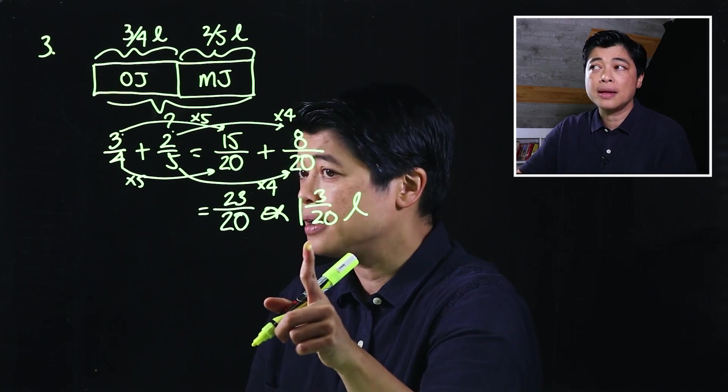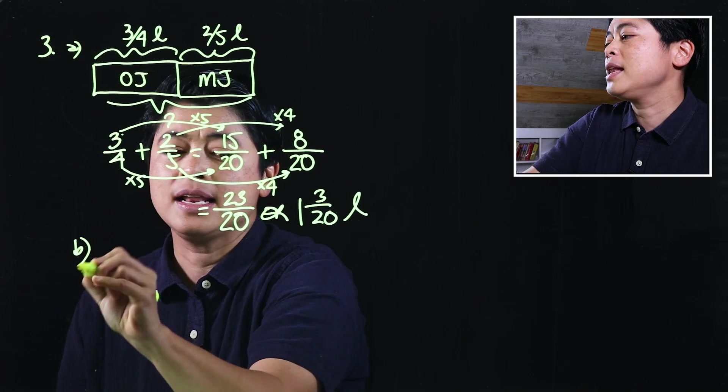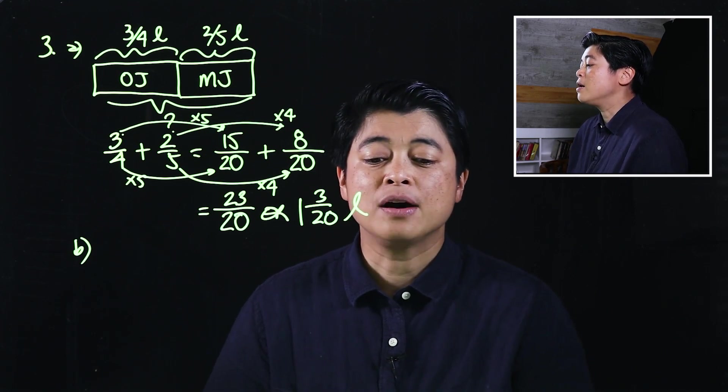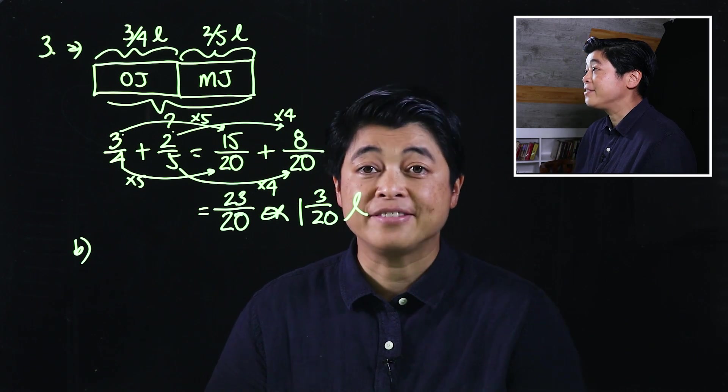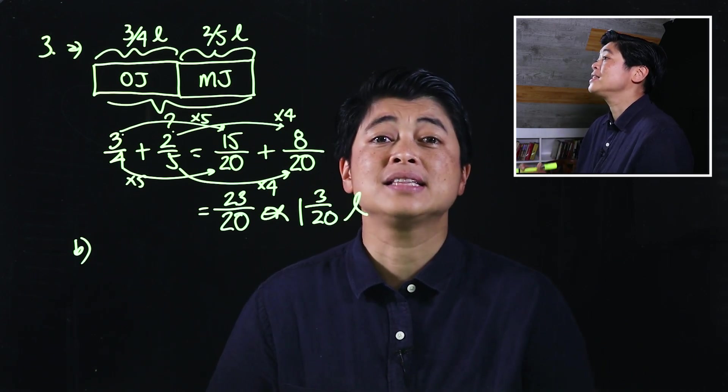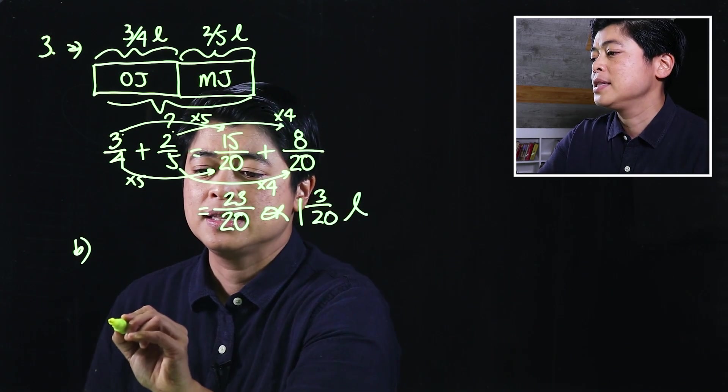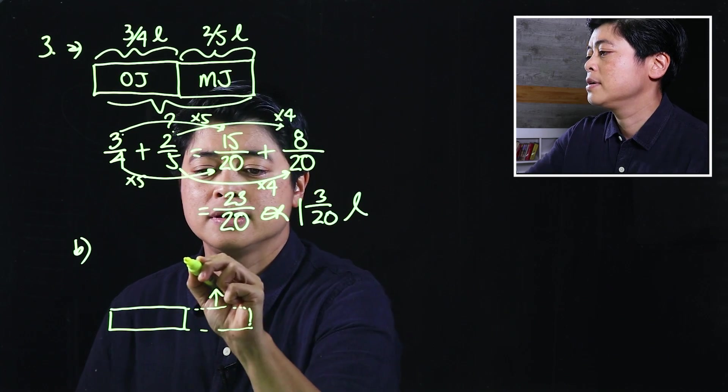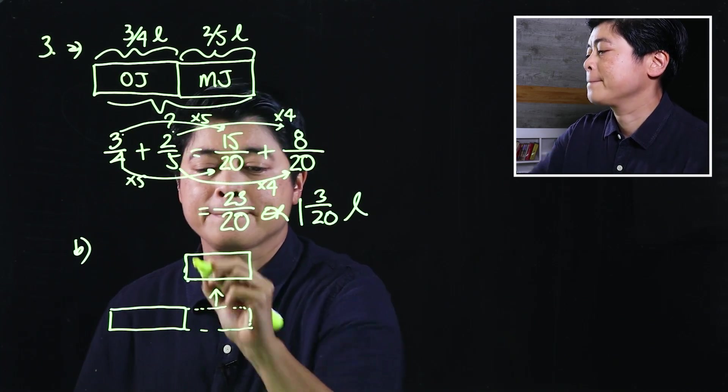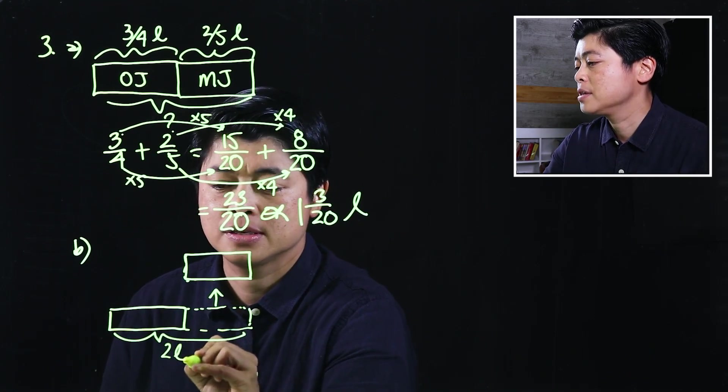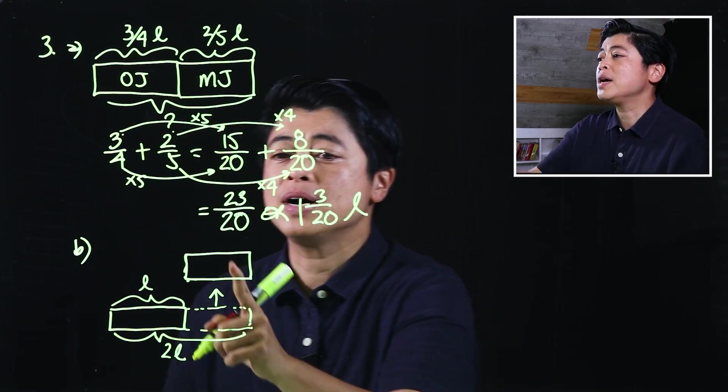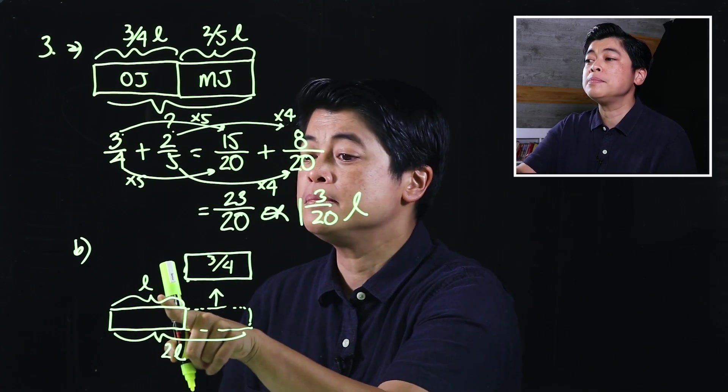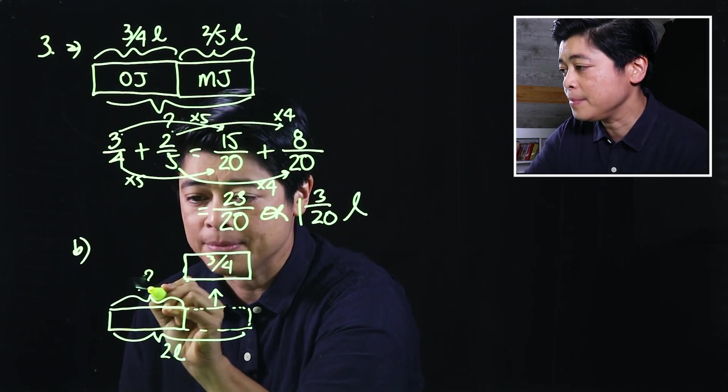That is letter A. In letter B it says Vin had two liters of orange juice at first. Then it says how much orange juice did he have left. The word 'did he have left' means this is a takeaway model. Which means this, and then remove. This is two liters, this is what's left, this was the orange juice used. That means that's three-fourths.